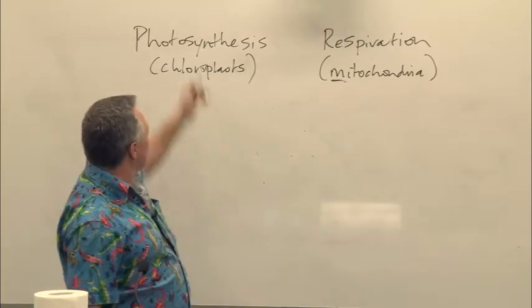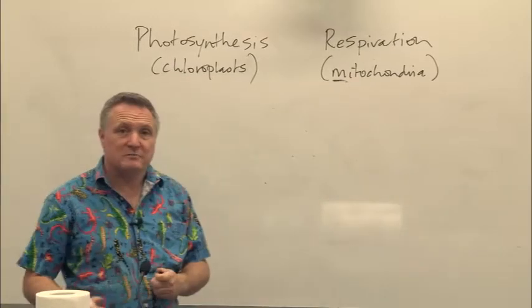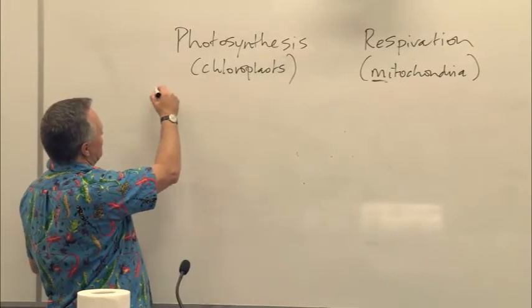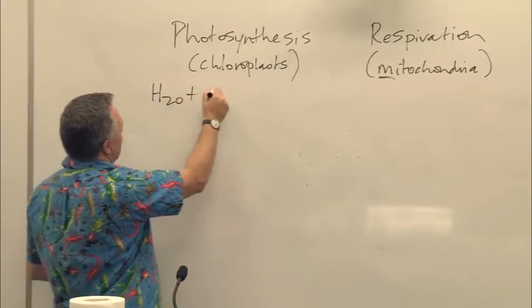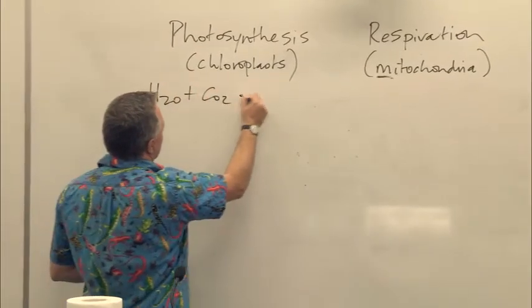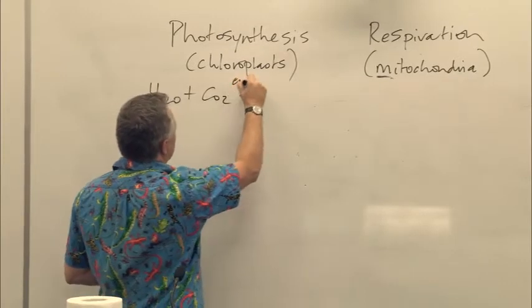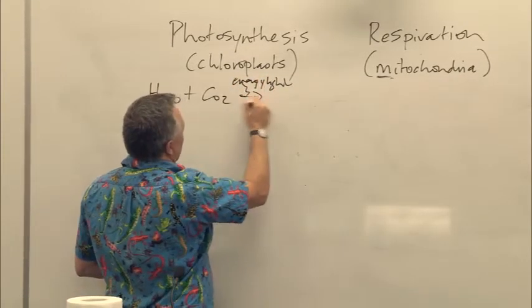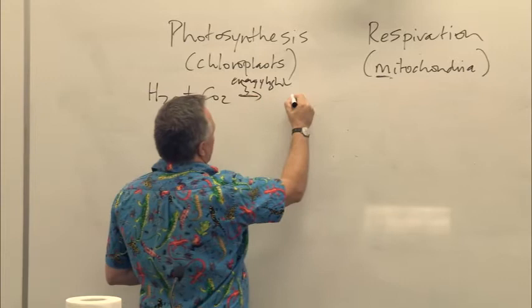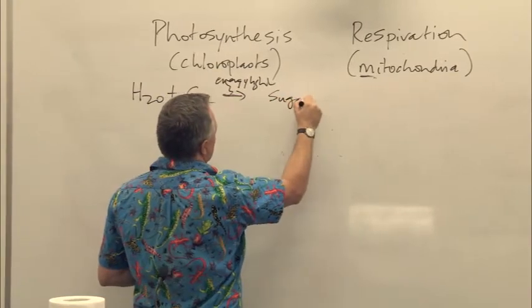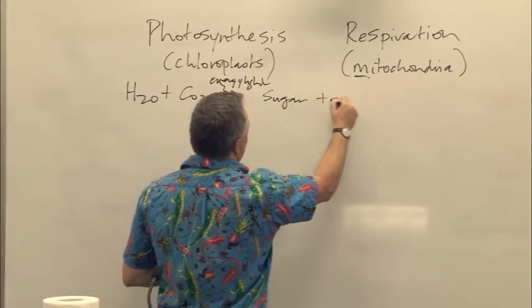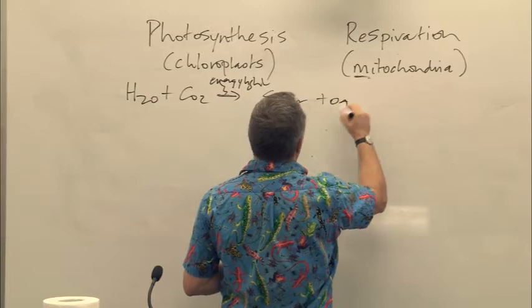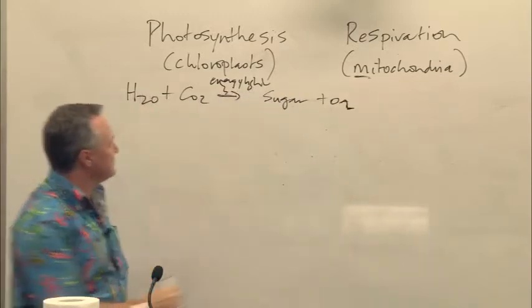So, photosynthesis — what are the main things that happen? As Jeff put up the reaction, you get water, you get carbon dioxide, and you use light energy. That's energy in the form of light, and you build up sugar molecules, and oxygen is given off, and there's new water produced too.